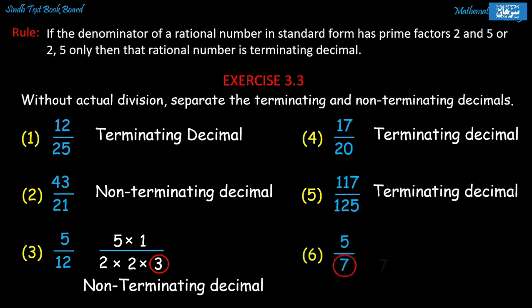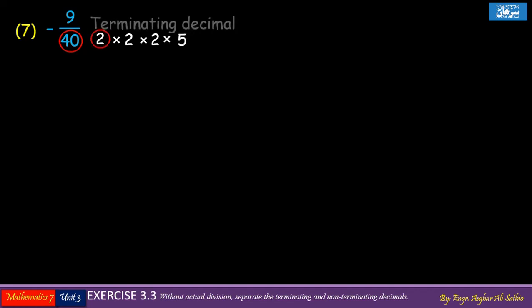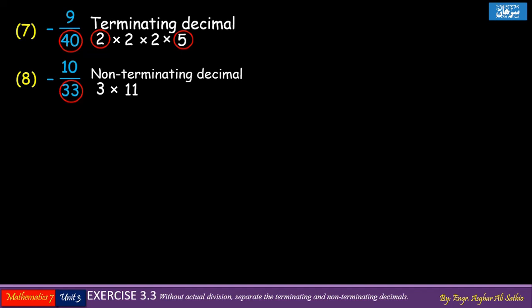Problem number 6: the prime factors of the denominator are 7 and 1 only, so it is a non-terminating decimal. Problem number 7: the prime factors of the denominator are 2 and 5 only, with no other digits in the factors, so it is also a terminating decimal. Problem number 8: the prime factors of the denominator are 3 and 11.